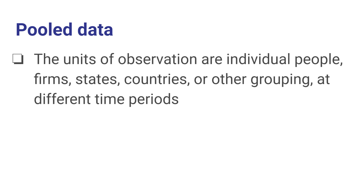Quite often, data is going to be available on a series of cross-sections of some population, and in that case we have something called pooled data. With pooled data, the units of observation are individual people, firms, states, countries, or other groupings, but now we're measuring them at different time periods. With pooled data, though, the individuals need not be the same people each time. Essentially, if you have a survey which is done periodically and you group all that data together in one dataset, that would be a form of pooled data.